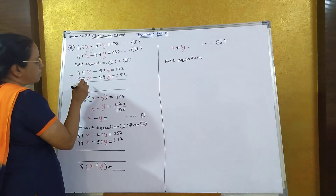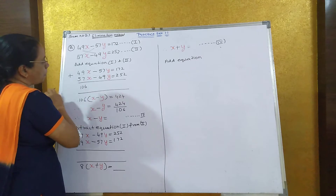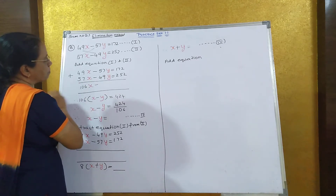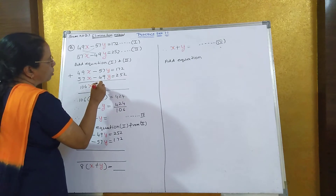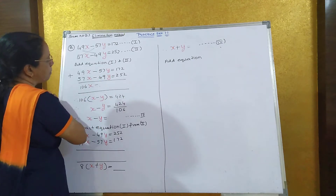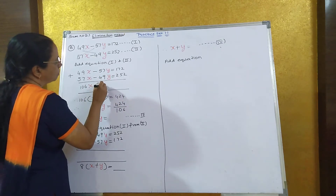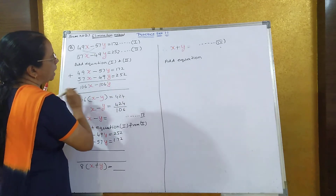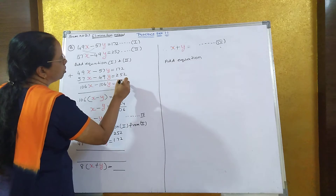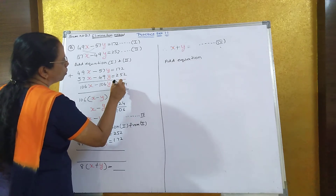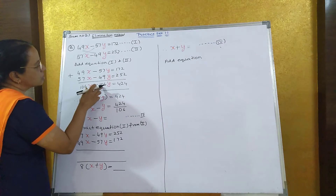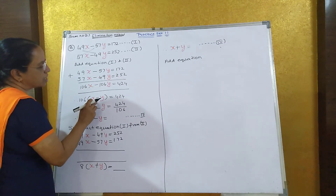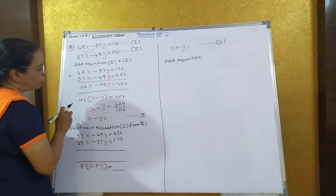49 plus 57, I will get 106x. Again here also when you add you get 106y, and when you add both of them you will get 424. Now 106 is common, so we will take 106 common. So 106x minus y is equal to 424.